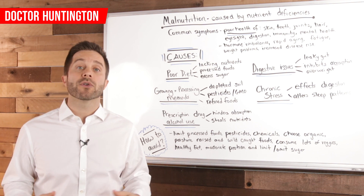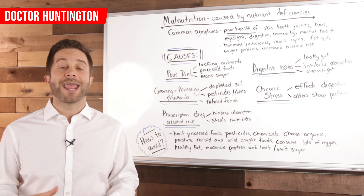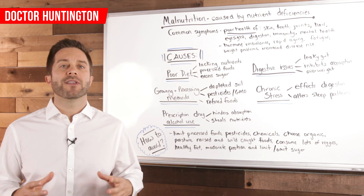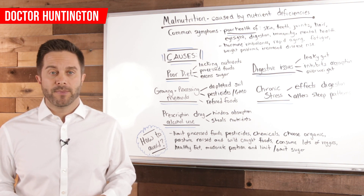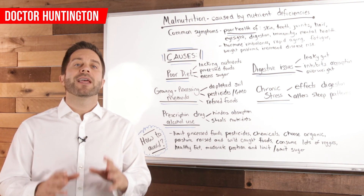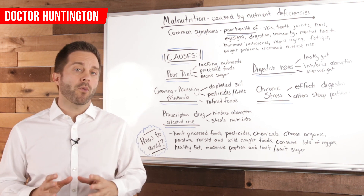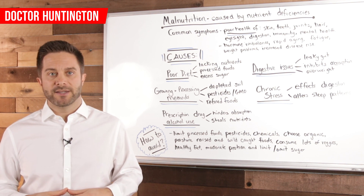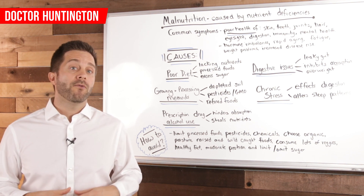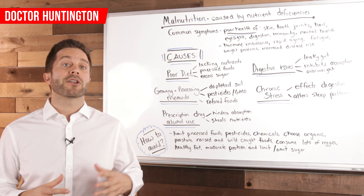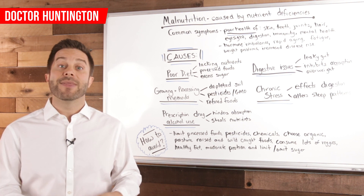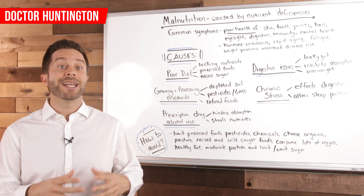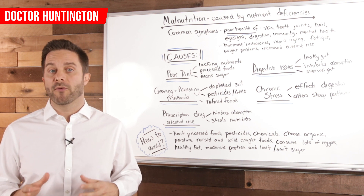Sadly, children who experience malnutrition in any form will have altered metabolisms, increasing their risk for adulthood obesity. The takeaway here is that if you're overweight, it's highly likely that you have nutrient deficiencies — because foods that cause obesity lack nutritional value, and they steal vital nutrients from your body and can interfere with your body's normal function.